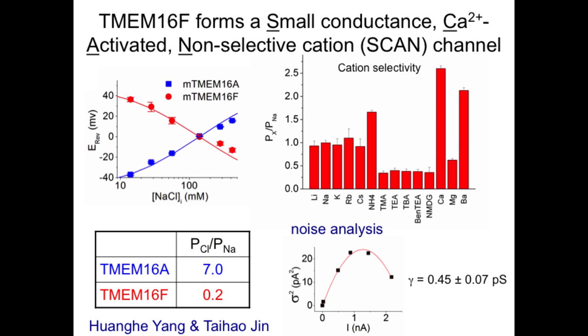We went on to test the ion selectivity of the TMEM16F channel. To our surprise, TMEM16F, instead of being a calcium-activated chloride channel, forms a non-selective cation channel with higher selectivity to calcium over other physiological cations. The single-channel conductance of TMEM16F is small, only 0.5 picosiemens. This is much smaller than the non-calcium-activated non-selective cation channels that are not permeable to calcium. Therefore, we named this novel channel as small conductance, calcium-activated, non-selective cation channel, or SCAN channel in short.